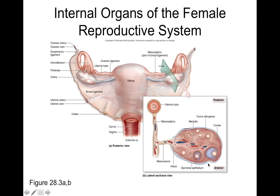Looking at the structure of the ovary internally, we have the cortex — the outer layer — and the medulla in the middle. The medulla has lots of blood vessels, lymphatics, and nerve endings. Associated with the cortex are follicles, ranging from primordial follicles that mature into larger and larger follicles up to the tertiary or antral follicle, which precedes ovulation. Lining the outside of the ovary is the tunica albuginea, associated with a germinal epithelium that supports the structure of the ovary. The ovary is held in position by the ovarian ligament.